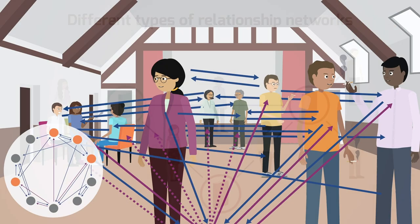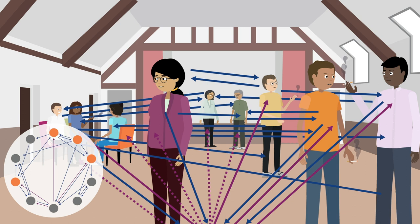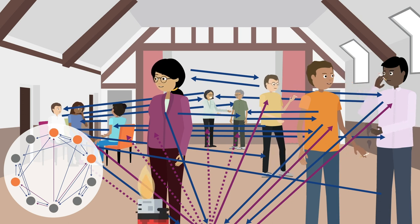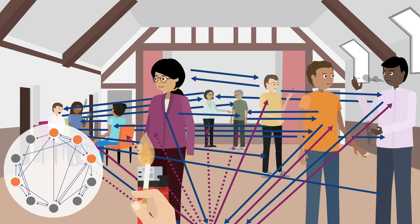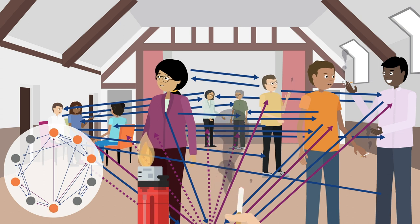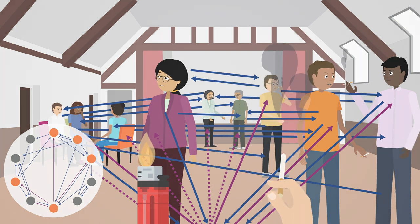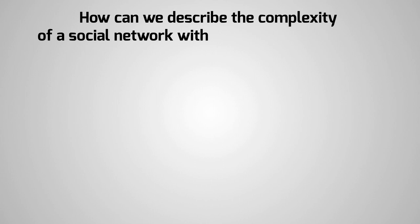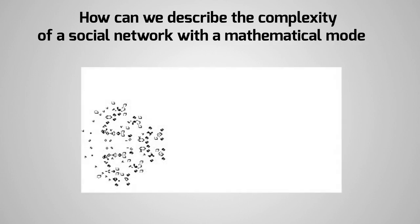The structure of a social network can influence individual behaviour. For example, people may start smoking because their friends smoke. How can we describe the complexity of a social network with a mathematical model?